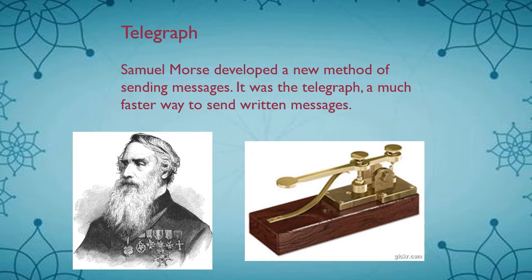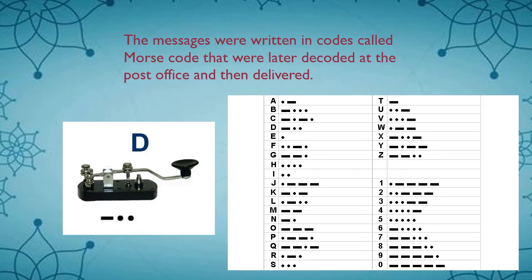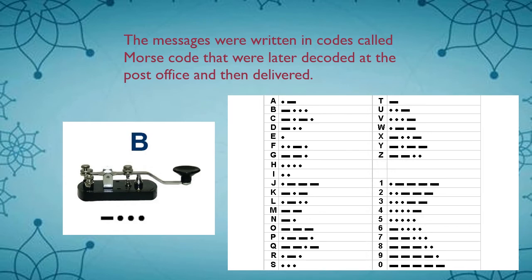Now let's learn about telegraph. Samuel Morse, an American inventor, developed the telegraph and a new method of sending messages. With the help of telegraph, we can send written messages in a much faster way. The messages sent through the telegraph were usually sent in code, called Morse code. The codes were decoded at the post office and then delivered to the receiver on a telegram. Morse code was used to send messages over long distances, and each letter of the alphabet was translated into short and long signals in the form of dots and dashes.